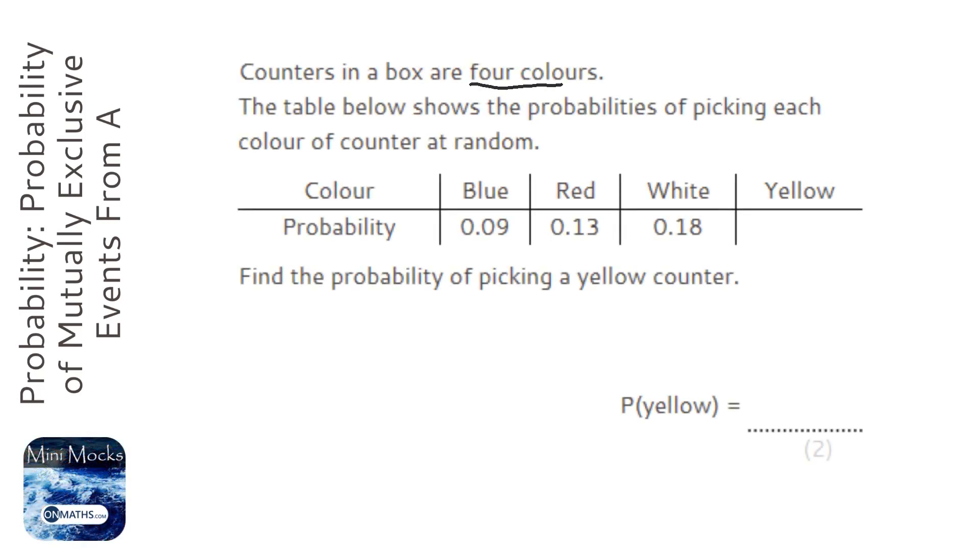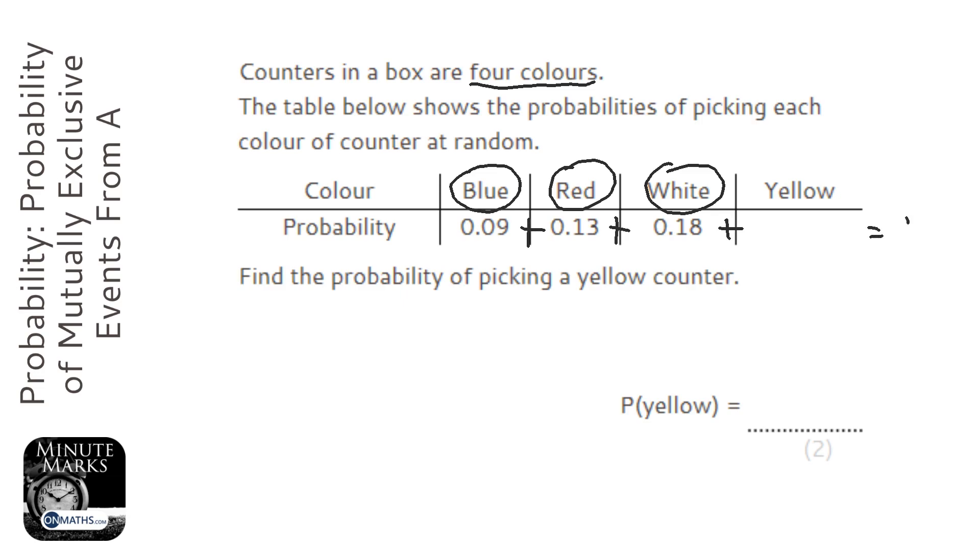This question says there are only four colours in the box, and it gives us the probabilities of three of them: the blue, red, and white. Now we know that all of these added together have to equal one.